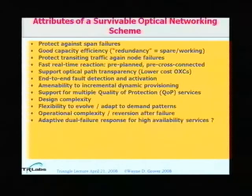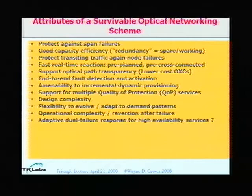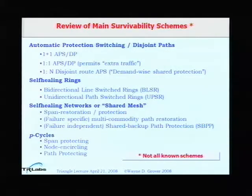We want algorithms to design these networks well — not always relying on integer linear programming as the only solution. We want them adaptive and with low operational complexity so technicians will actually accept the scheme. After a failure, reversion is the process of deciding whether to restore signals to their original routing or leave them as-is. The main survivability schemes extant today include automatic protection switching, which is historically the longest known approach — found even in early fiber and radio systems — where one channel is set aside to protect N working channels.